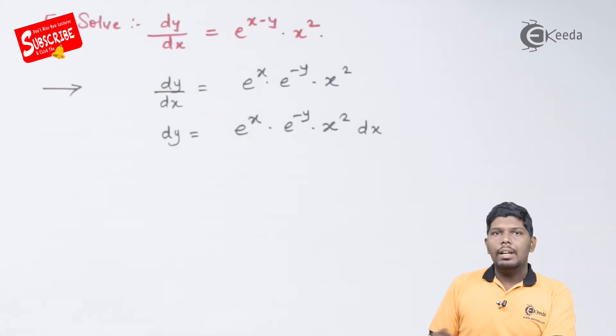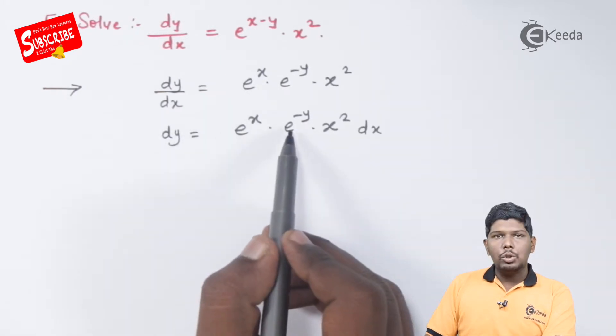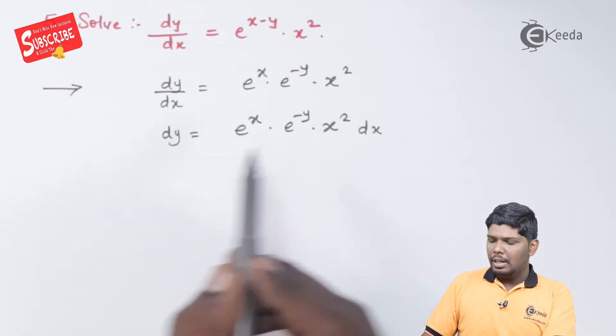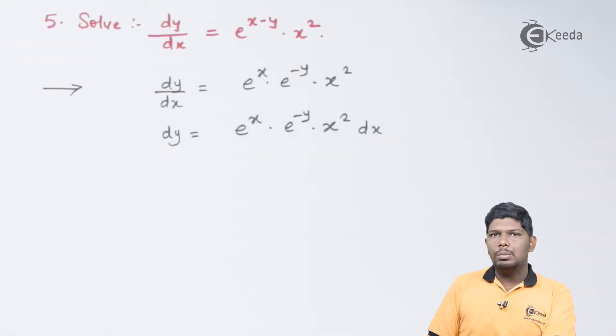On the left hand side, we need y as a variable. So, we have e raised to minus y which will be divided here and rest all the terms will be in terms of x.